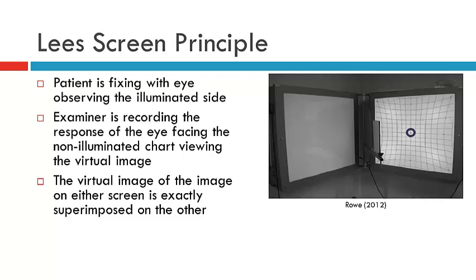They'll ask the patient to point or superimpose their pointer on the examiner's pointer, but to do so on the non-illuminated screen. The reason the patient's able to do this is because the plain mirror is creating a virtual image such that the tangent screen and where the examiner is pointing is superimposed on the non-illuminated screen. This is purely based on the principle of plain mirrors.